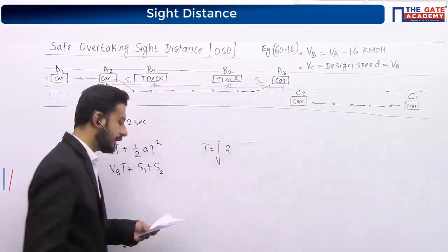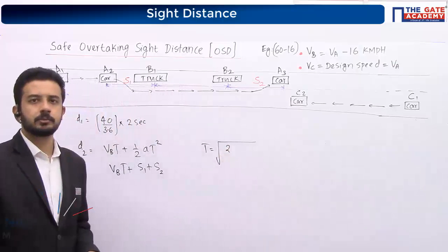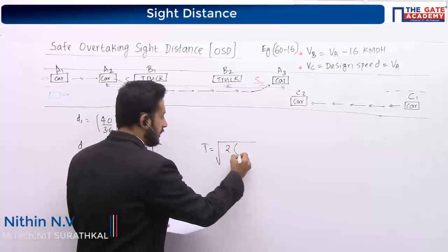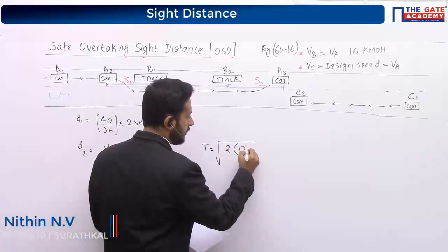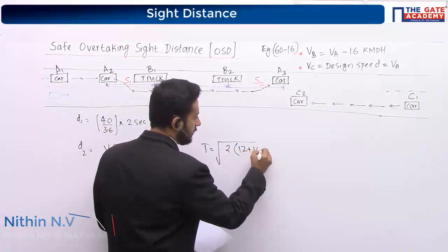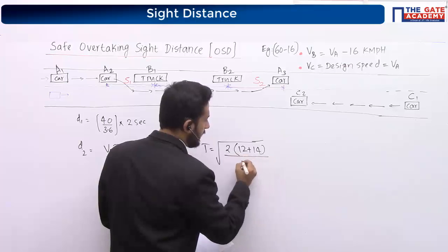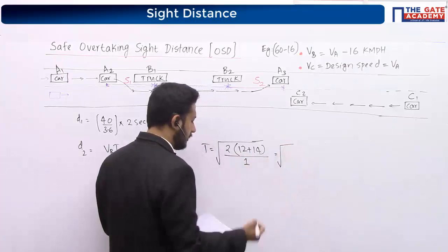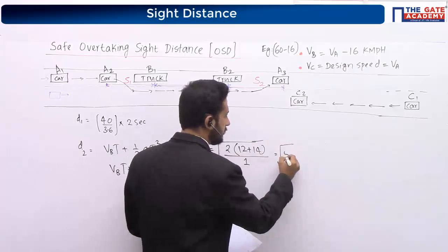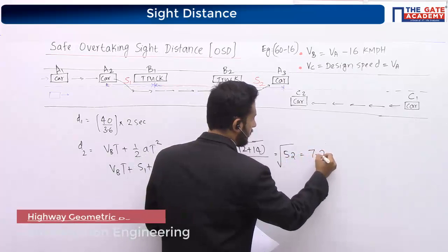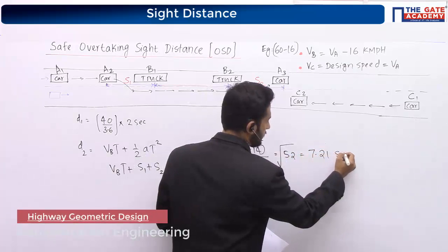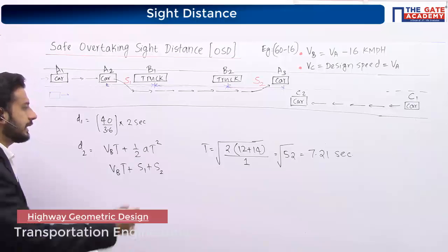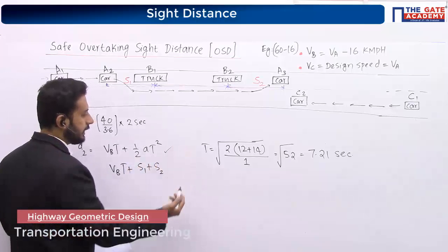In this case they have given s1 and s2, so it is not 4s by a — it is 2 into (s1 + s2) by a. So (12 + 14) divided by acceleration which is 1, giving root of 52, that is 7.21 seconds. Correct.